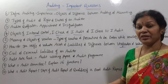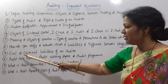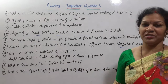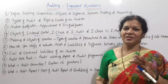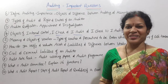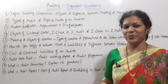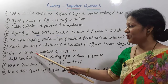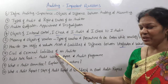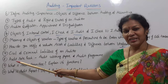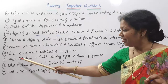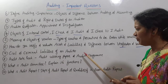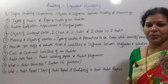Seventh question: civil and criminal liabilities of an auditor — you can definitely expect this question. This is a sure-shot topic to prepare.